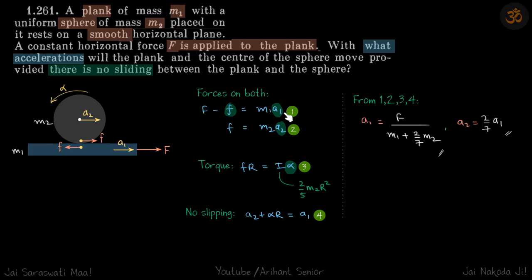Now we have four equations and four variables: f, a1, a2, and alpha. So we have solved that, and we'll get our answer for a1 and a2.